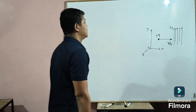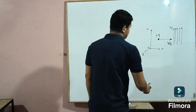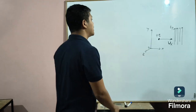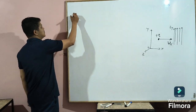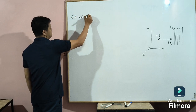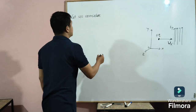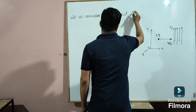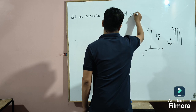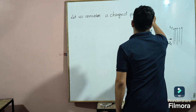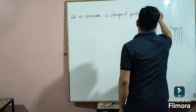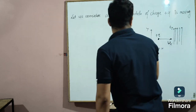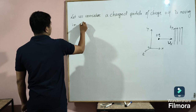This is the Z axis. Suppose this is the origin — that's the coordinate system. When it enters this electric field, we need to show that its path will be a parabola. Let us consider a charged particle of charge positive Q moving in the X direction.